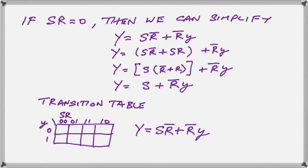Now, if we have SR equal to 0, which means we have a stable circuit, we can simplify this function even further, and there you see the process which we can do to simplify it. And we simply end up with S or R bar Y.